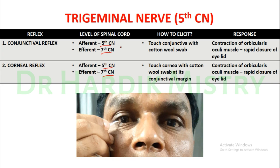To check the conjunctival reflex, touch the conjunctiva with a cotton wool swab. As you can see in this photograph, you touch the conjunctiva with the cotton swab and the response will be contraction of the orbicularis oculi muscle, resulting in rapid closure of the eyelids — it is a protective reflex. The same applies to the corneal reflex, but here you touch the cornea rather than the conjunctiva.